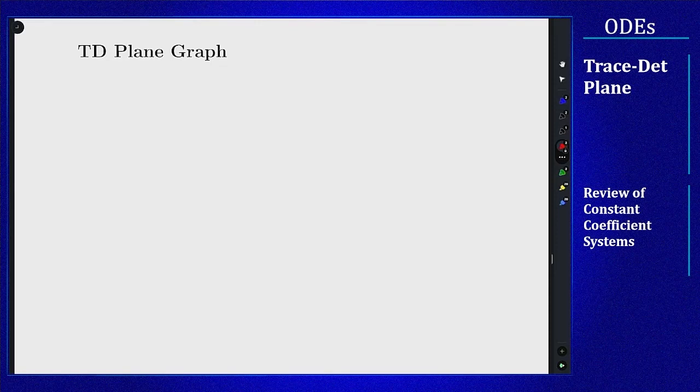In this video we'll look at the trace determinant plane graph itself, how it's constructed, and how we can use it to interpret what's going on with these different constant coefficient systems.